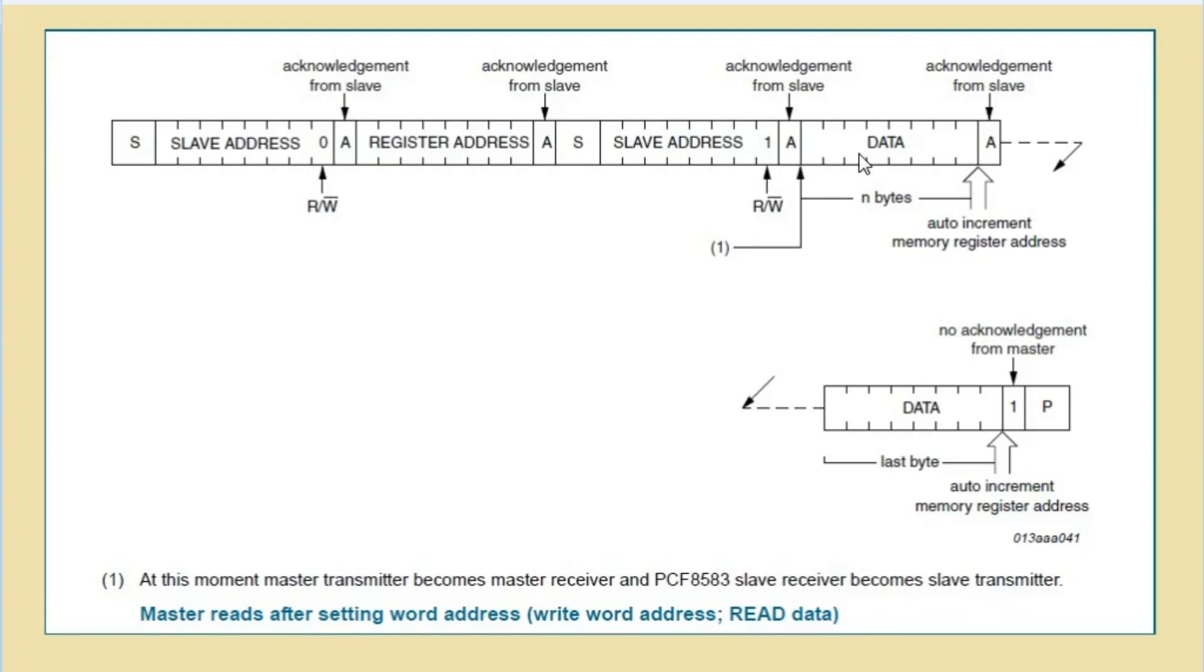And after that, the slave will send data and master will receive data followed by acknowledgement. And at the end of the reception, master will send no acknowledgement and stop bit.